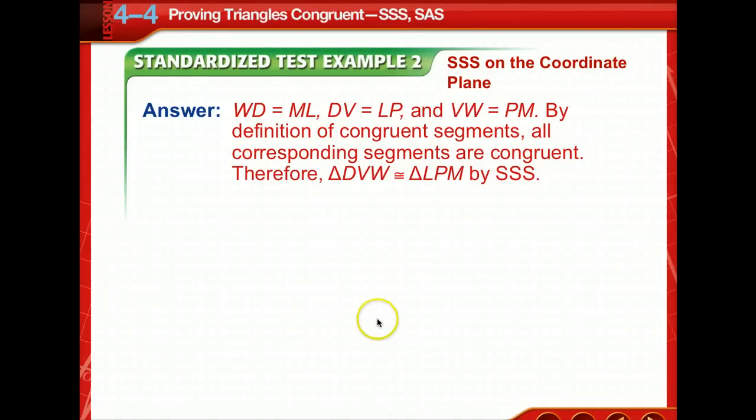So we can say that by definition of congruent segments, all corresponding segments are congruent. So our congruent statement, triangle DVW, is congruent to triangle LPM by side, side, side. See how easy that was? It's time consuming, a lot of math, but it's nothing that you haven't already done before.